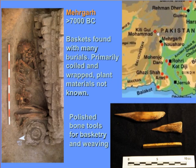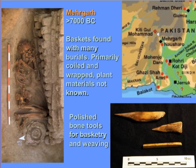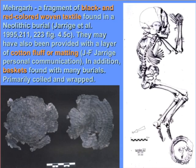At Mehrgarh, a burial example shows a basket buried with the dead. This is before the development of pottery, so people were making baskets and coating them with bitumen to make them watertight, and also using them to hold and roast foods. We also have bone tools used to make baskets. We also have examples of woven textiles from Mehrgarh, and one has black and red coloring — suggesting they were dyeing textiles. Red could have come from madder root, and black from some ferrous iron-based material.